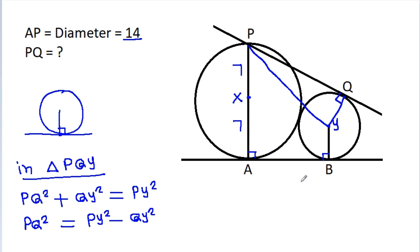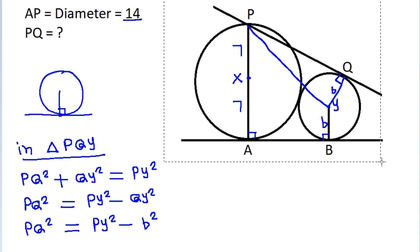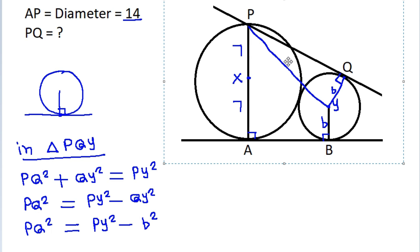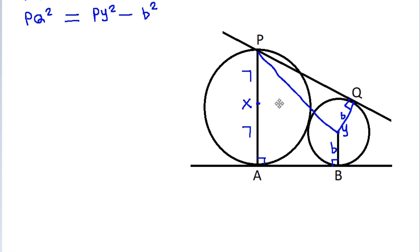Suppose the radius of the smaller circle is b. Then PQ² = PY² - b².